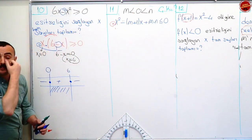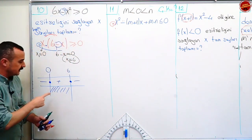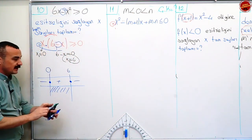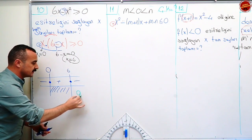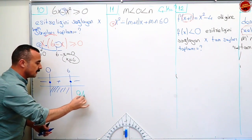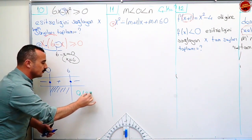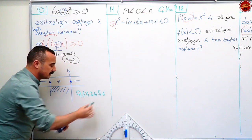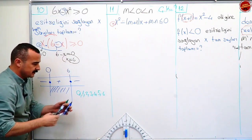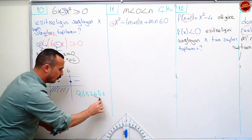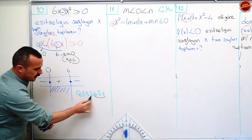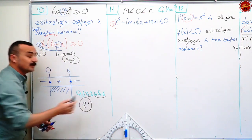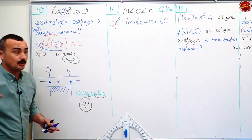Ama benden bunun çözüm aralığını istemiyor. x tam sayılarının toplamları nedir diyor. Sıfır eşitlik var. Sıfırdan başlıyorum: sıfır, bir, iki, üç, dört, beş ve altı. Bunların toplamlarını istiyor. Şuradan on beş geldi. Yirmi. Yirmi bir sorumun cevabı olmuş oldu. Tamam mı?